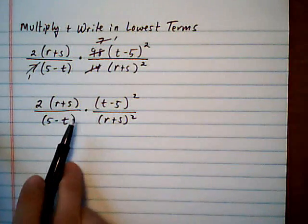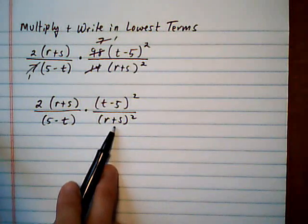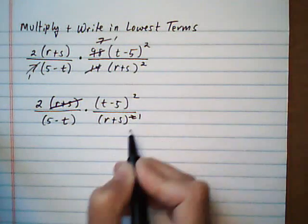Alright, now looking at the binomials, I see that I have an r plus s on top and 2 r plus s's on the bottom. So I can cancel 1 on top with 1 on the bottom, leaving me 1 on the bottom.